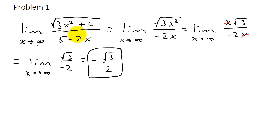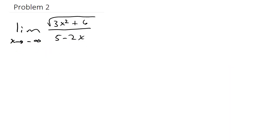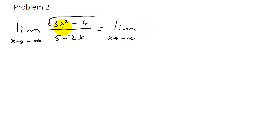Let's take a look at this same problem, but now as x goes to negative infinity. It's just like the problem before — we keep the term with the largest exponent in the numerator and the term with the largest exponent in the denominator, giving us the square root of 3x squared over negative 2x.